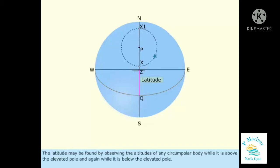The latitude may be found by observing the altitudes of any circumpolar body while it is above the elevated pole and again while it is below the elevated pole.